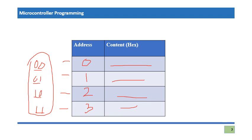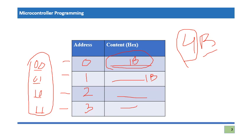If each slot has the capacity to store one byte of information, then with four slots we have four bytes total. Each slot holds one byte, and there are four slots — because 2 power 2 equals 4, where 2 is the size of the address bus. So the total size of this memory is four bytes.